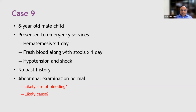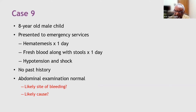The next question is: what is the likely cause of such bleeding? There are no clues in this child — no past history, normal abdominal examination, and he just presented with massive vomiting without any trigger. Participants are asked to type their answers, with responses including vascular ectasia, varices, variceal bleed, gastritis, and gastric ulcer, with most answers in favor of esophageal varices.